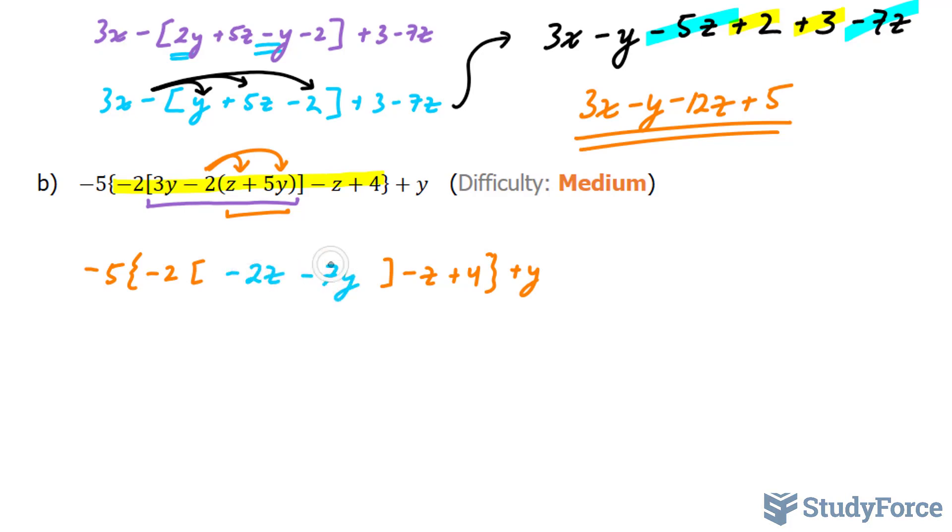These two terms cannot be combined, so we need to liberate them with this negative 2. And we end up with negative 5, curly brackets, plus 4z plus 14y minus z plus 4, plus y on the outside.